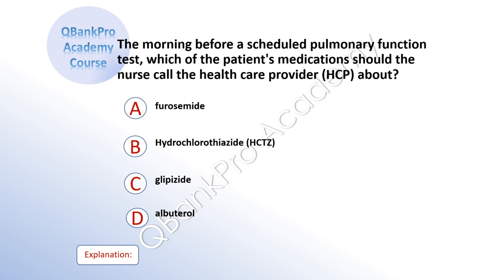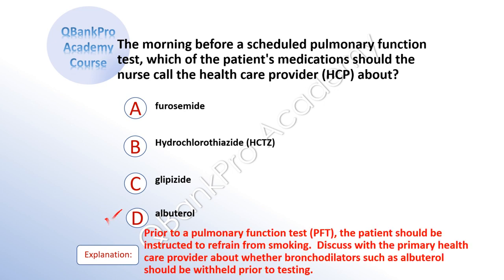The morning before a scheduled pulmonary function test, what are the patient's medications the nurse should call the healthcare provider about? The correct answer is D, albuterol. Explanation: Prior to a pulmonary function test, the patient should be instructed to refrain from smoking. Discuss with the primary healthcare provider about whether bronchodilators, such as albuterol, should be withheld prior to testing.